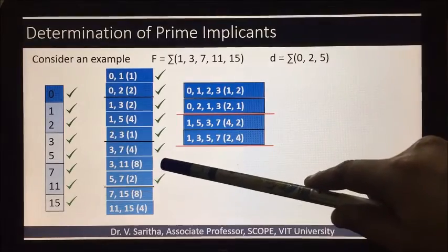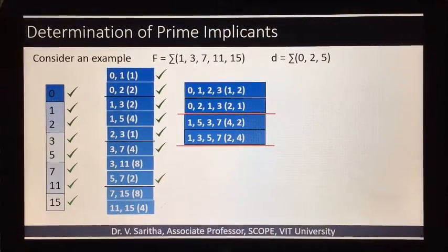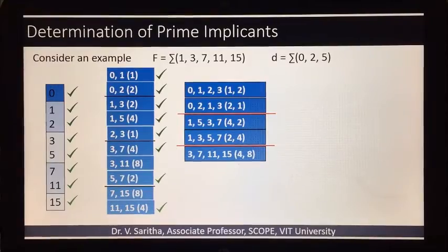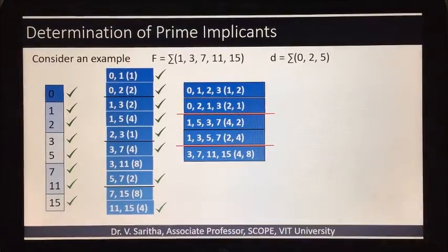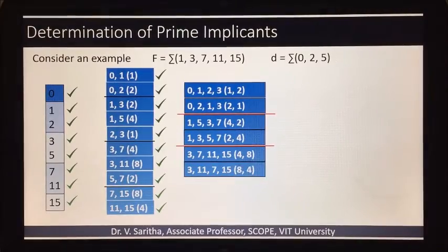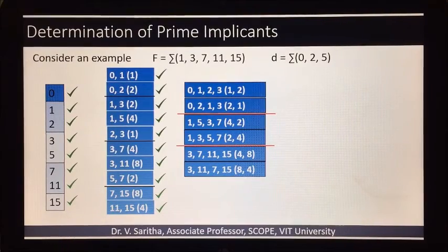Now if you see 3,11 and 7,15, new difference is 4 so we can compare them. And 3,7 and 11,15 also can be compared. So 3 quads are obtained.